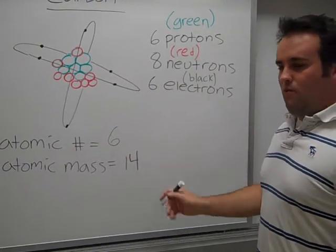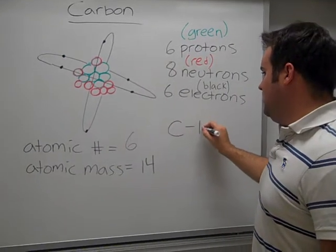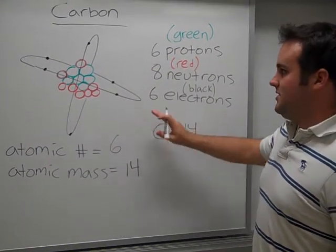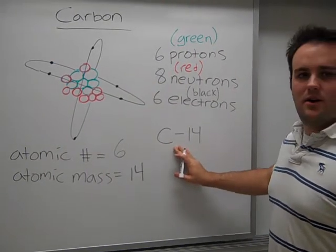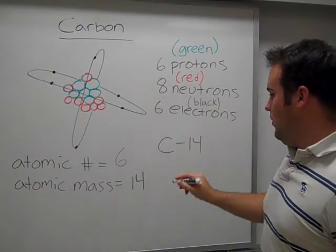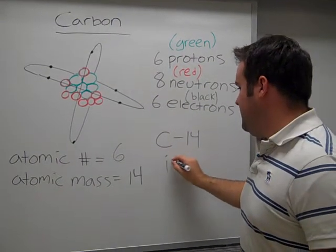We often write this down as the element symbol dash its atomic mass. This particular atom right here, when the atomic mass has been changed due to the number of neutrons increasing, we refer to that as an isotope.